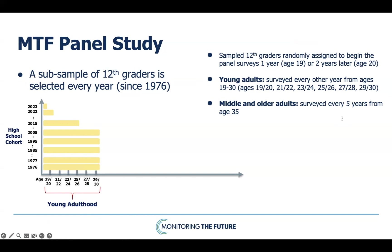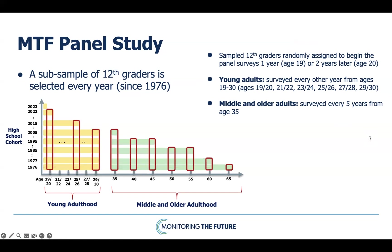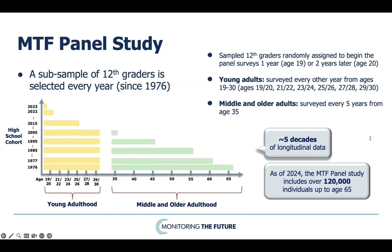Every year, a new cohort of respondents is added to the panel study. This means that not only is the panel study longitudinal — that is, following respondents across adulthood — but it also provides a series of cross-sectional surveys by age groups. Using the MTF data, researchers are able to examine behavioral change across historical time in consistent age segments of the adult life course and key subgroups. Researchers can also examine changes linked to different types of environments, such as high school, college, employment, or role transitions like marriage and parenthood. As of 2024, the MTF panel study includes five decades of longitudinal data from more than 120,000 individuals up to age 65.